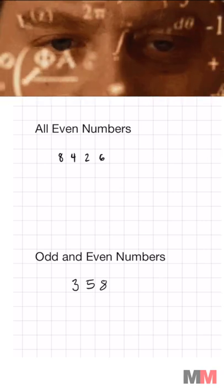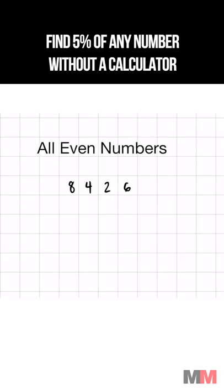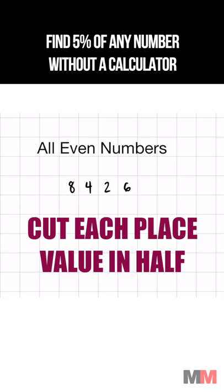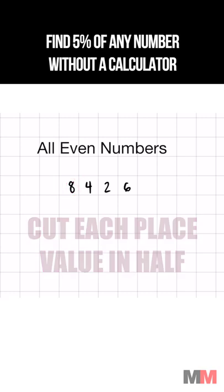Here's how you quickly find 5% of any number. All you have to do is start with the highest place value, cut that in half, and put the result at the bottom.